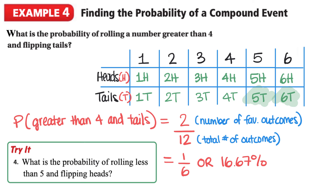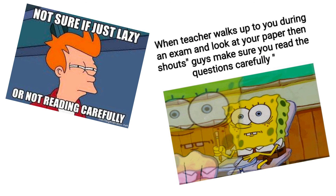Here's your fourth try question: find the probability of rolling less than five and flipping heads. Remember, with probability we want to be super careful with reading the questions.